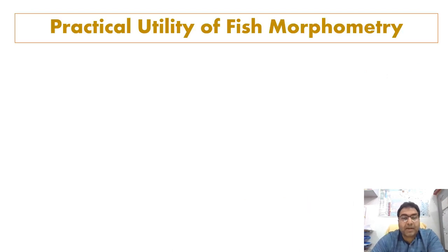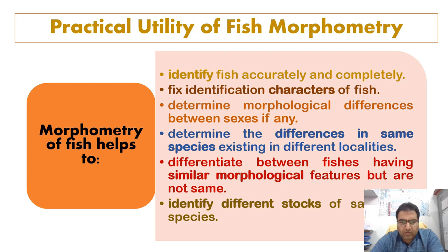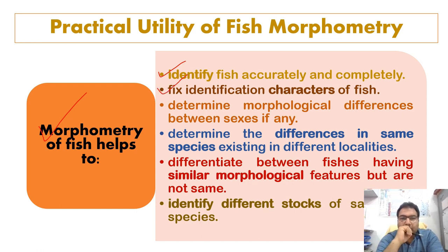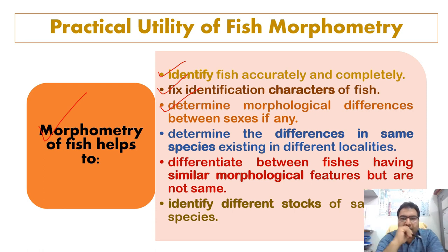Now the question arises: what is the practical utility of fish morphometry? Fish morphometry helps to identify fish accurately and completely. It helps to fix identification characters of a fish, determine the morphological differences between the sexes if any, and determine differences in the same species which exist in different localities.